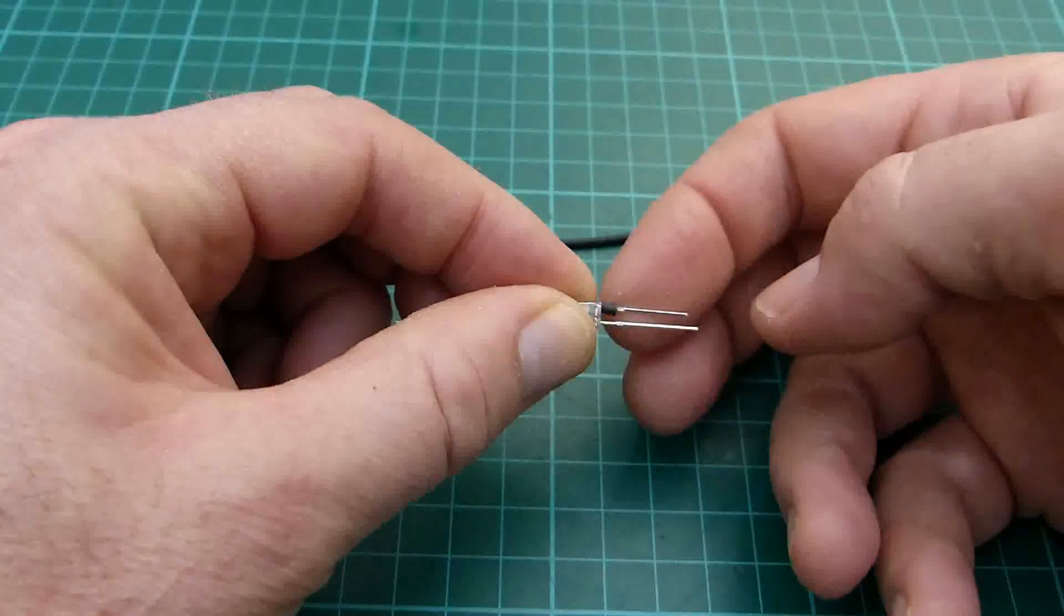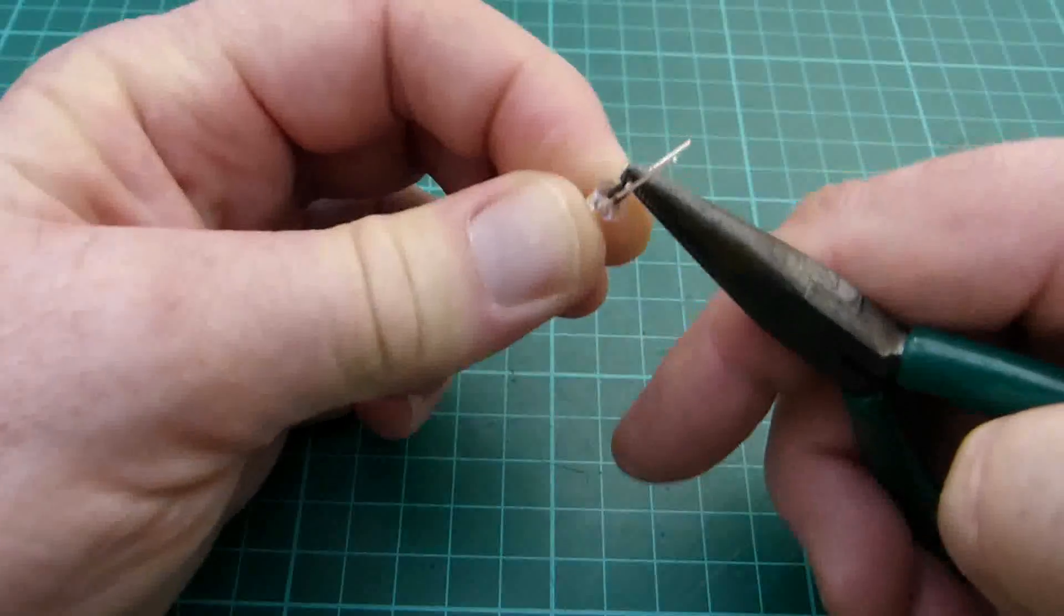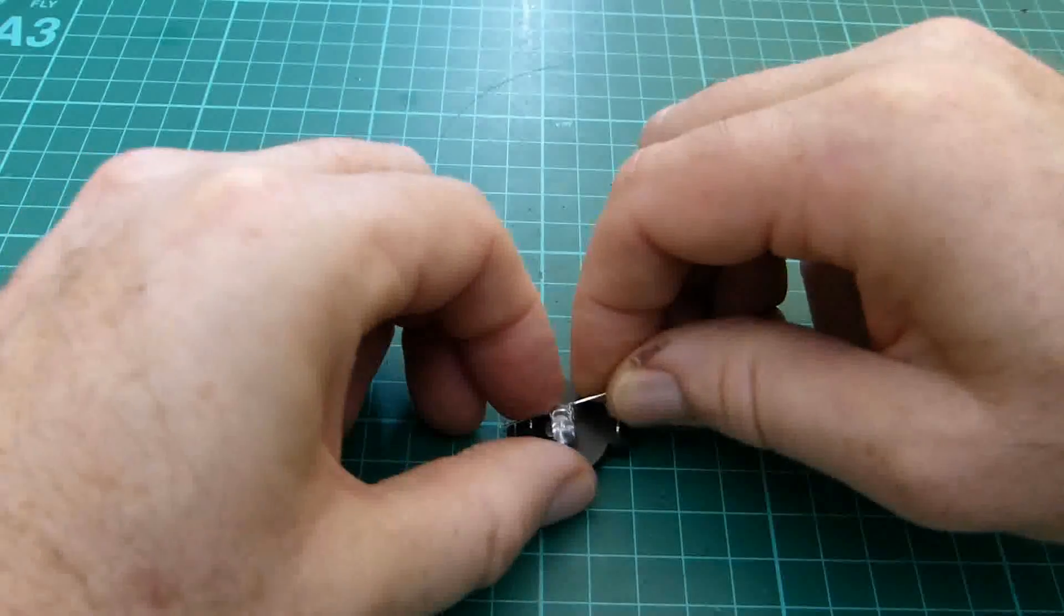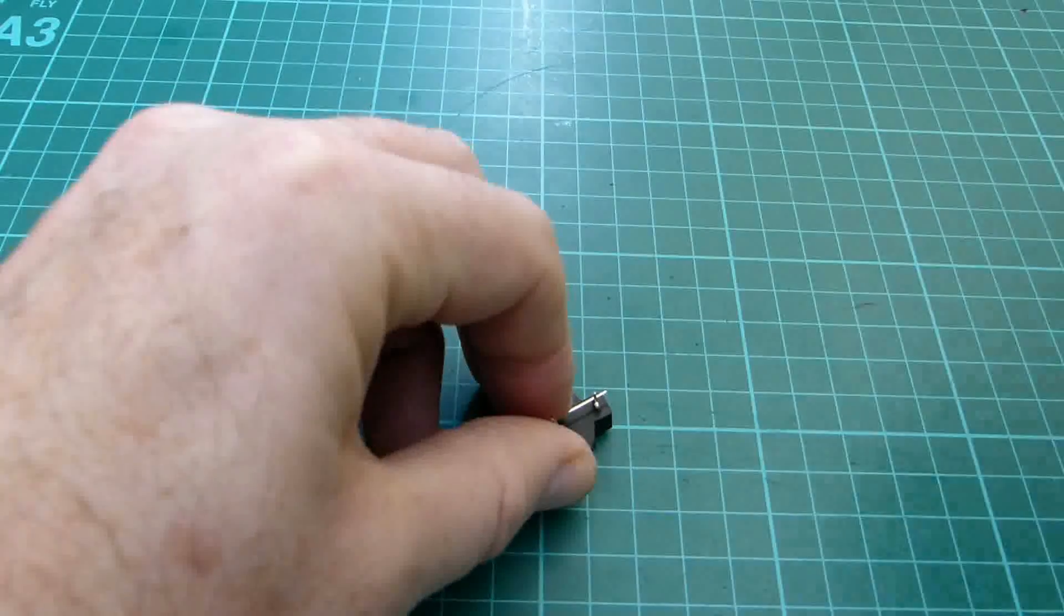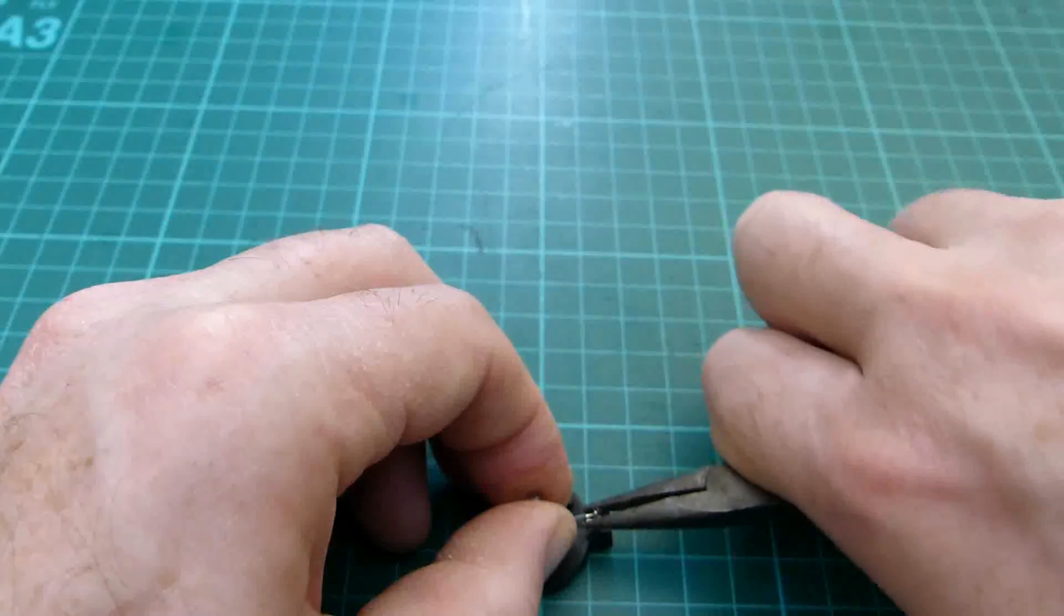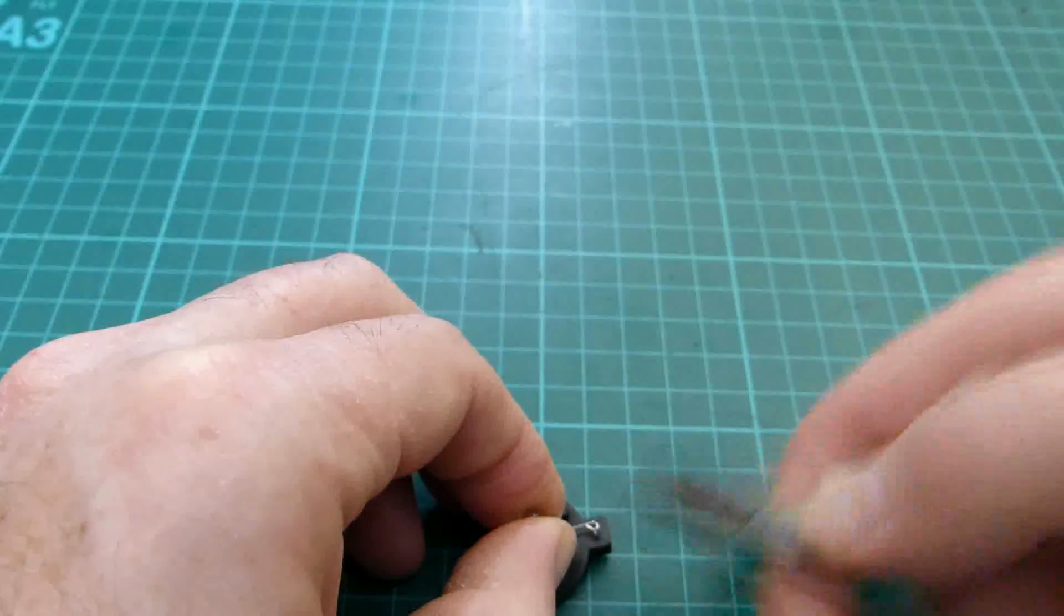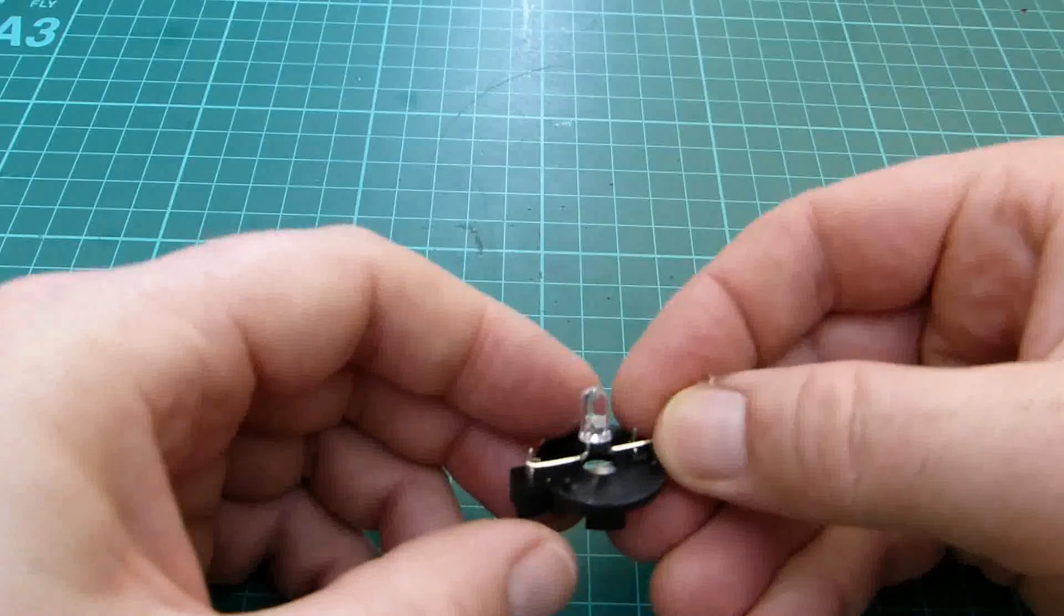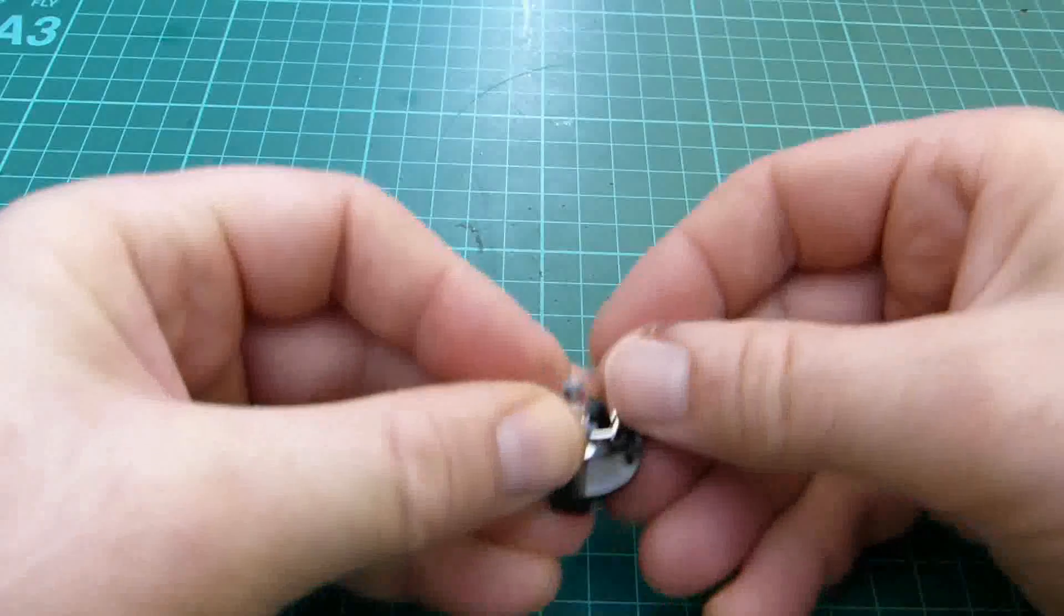I put a small piece of heat shrink tubing on the short LED lead to identify it and then bent it over with some thin nose pliers. I also bent over the long LED lead and then placing the LED over the hole in the battery holder I bent the long lead around the positive terminal. The short LED lead was then bent around the negative terminal.